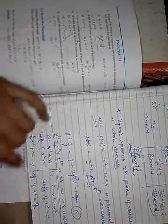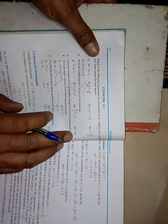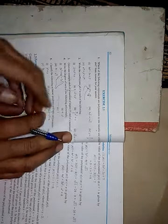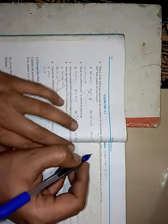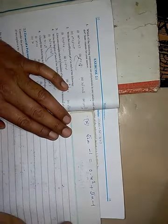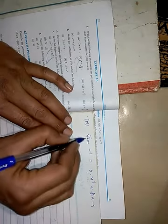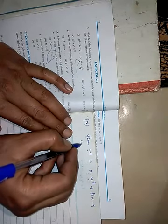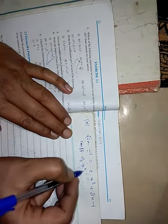For √2·X − 1, there is no X² term. We can represent it as 0·X² + √2·X − 1, because 0 multiplied by anything is 0 — so there is no change. So the coefficient of X² here is 0.